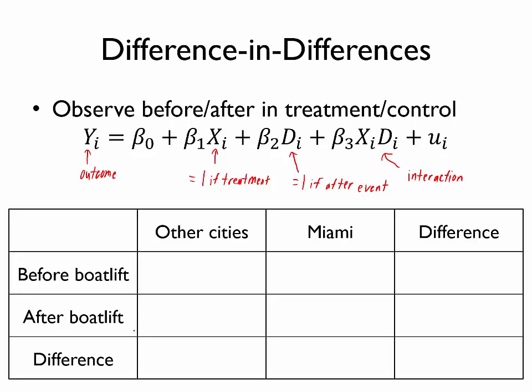Okay, so if we start with this top left cell, we are looking in some other city, not Miami, which would mean that X is equal to zero. We're also looking before the boat lift, which means that D is equal to zero. So if I wanted to predict the outcome y, then I'm going to plug in zero for X, zero for D. The interaction is also zero. And so the predicted wage would just be β̂₀.